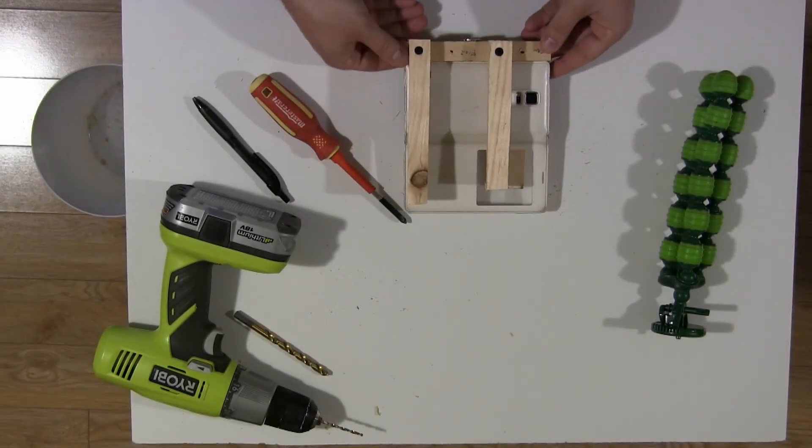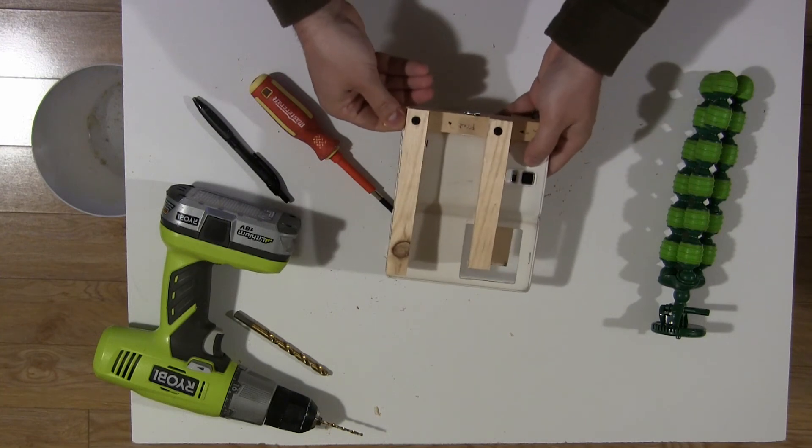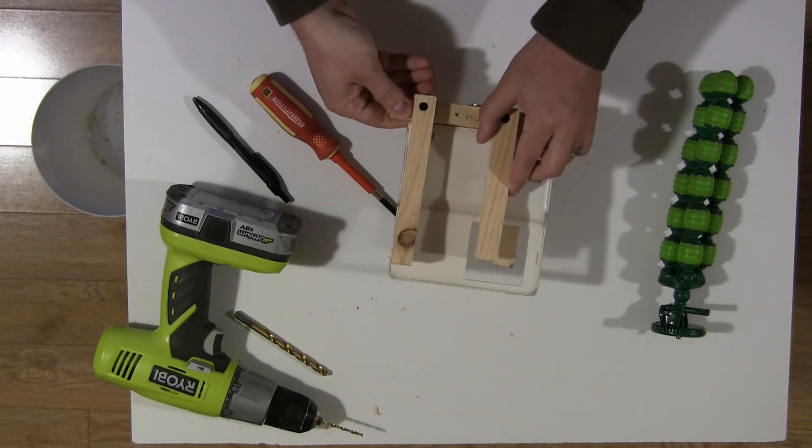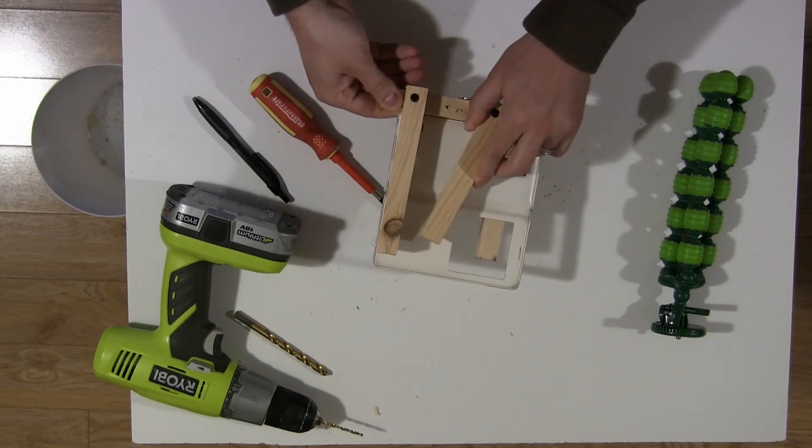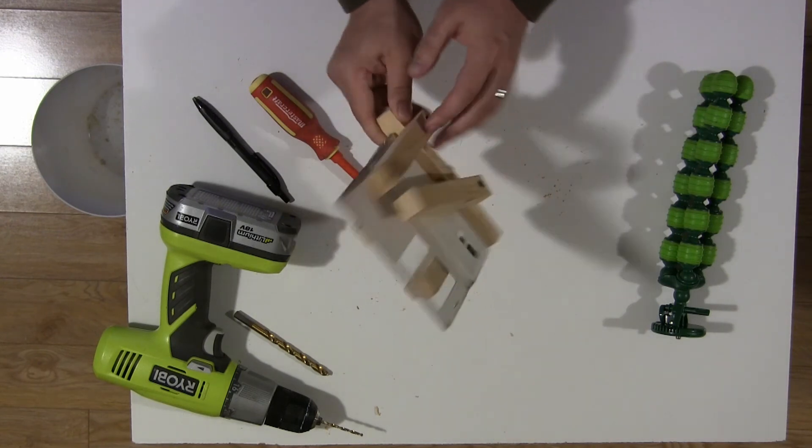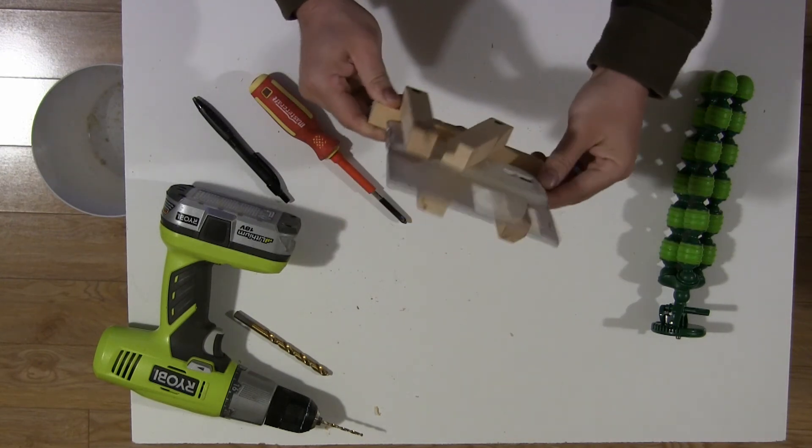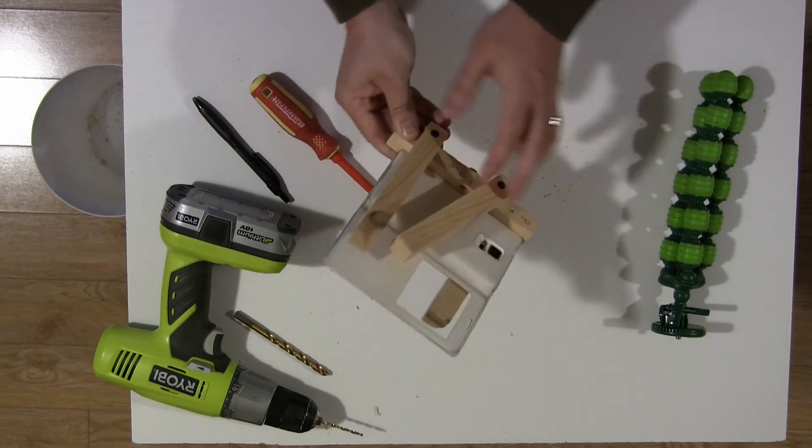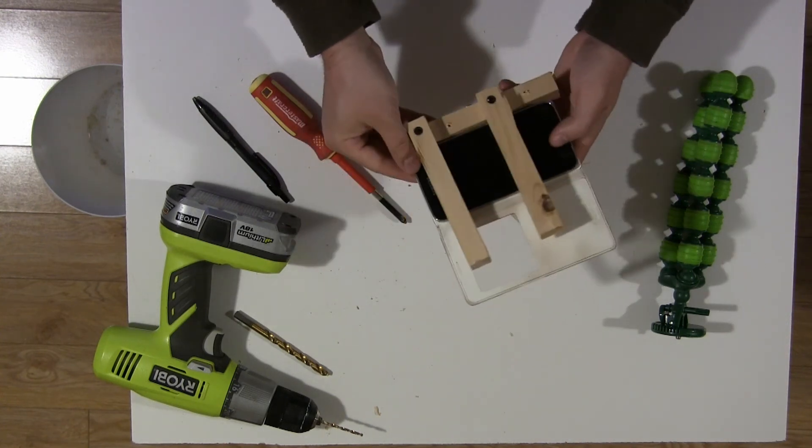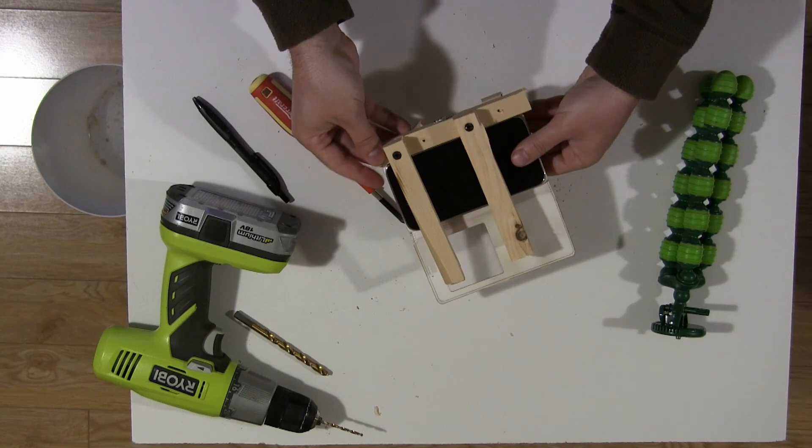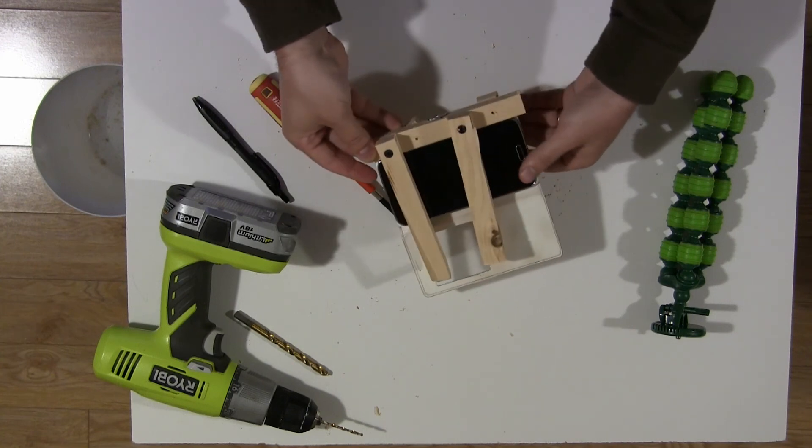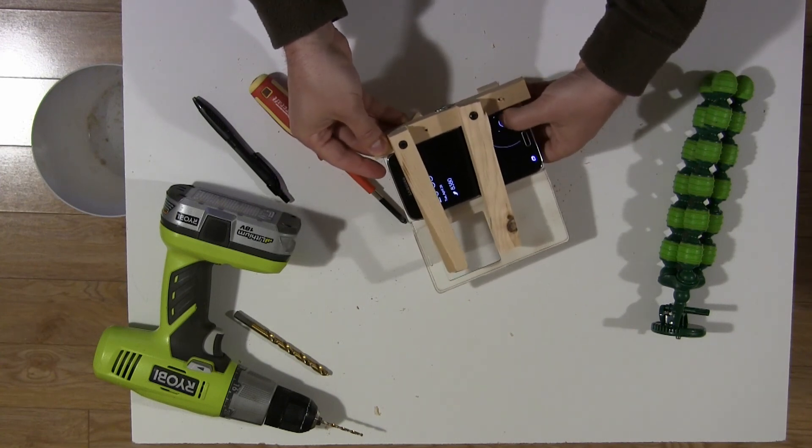And there you go. My flash and my camera are unobstructed. If I need a little bit more light, I can still do this, but it's not going to tilt out in any way. And in the back, I still have access to what I need in order to unlock my phone and start the camera.